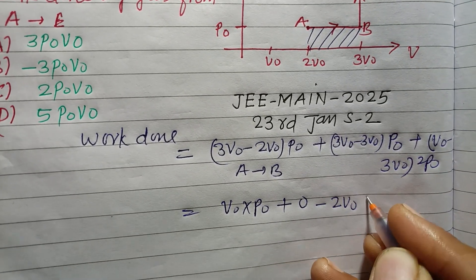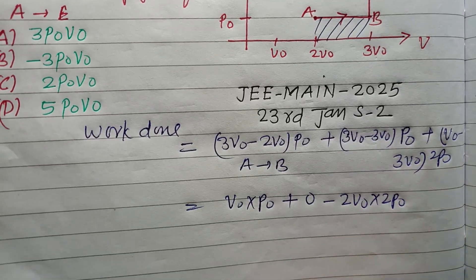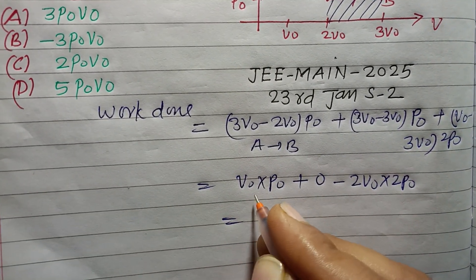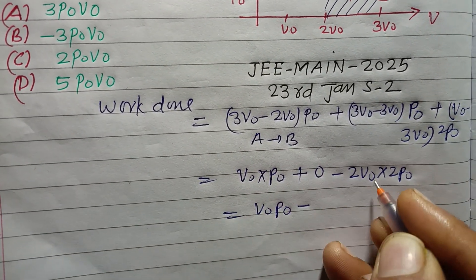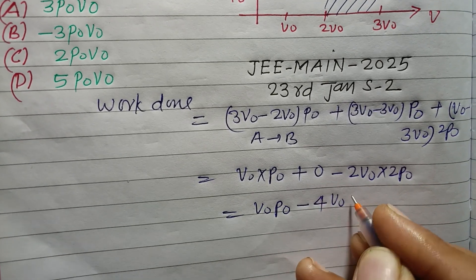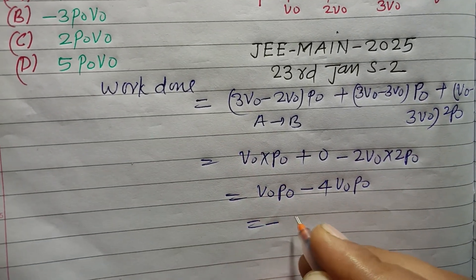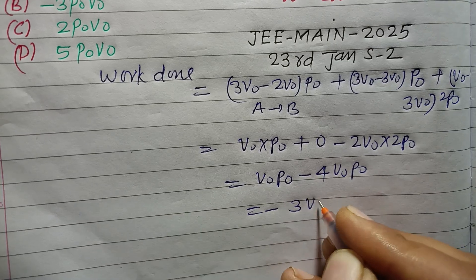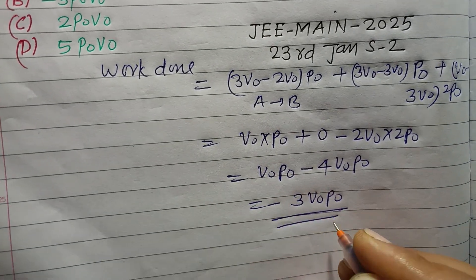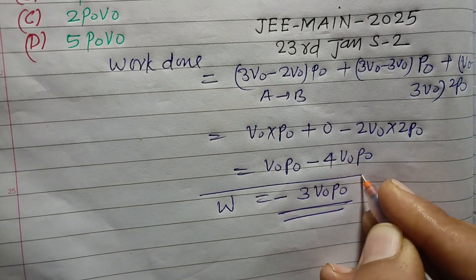So minus 2V₀ into 2P₀. Therefore, V₀P₀ minus 4V₀P₀. So this is minus 3 times V₀P₀, which is the work done from A to E.